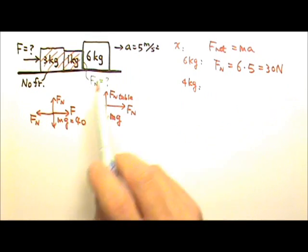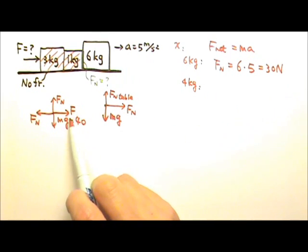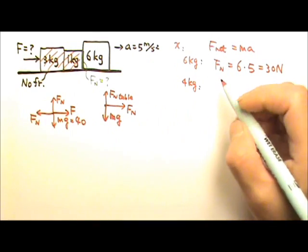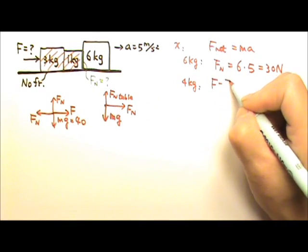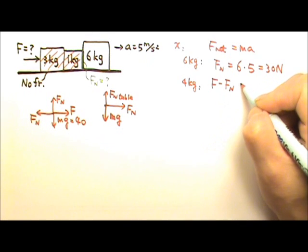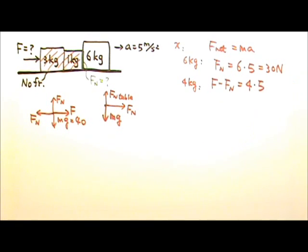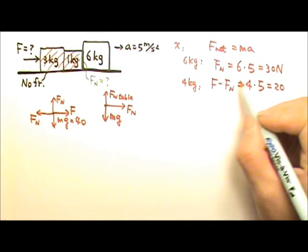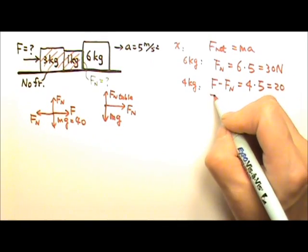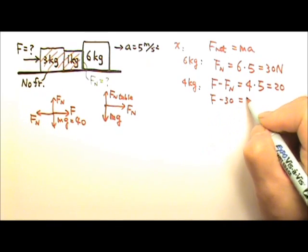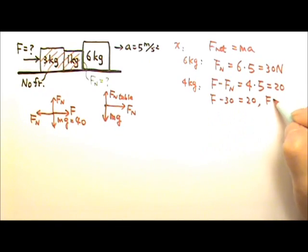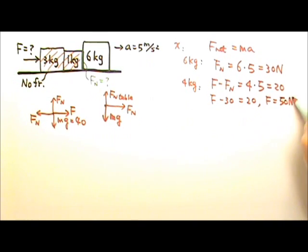For the 4 kilogram block, the acceleration goes to the right, meaning the rightward force must be bigger. So we write F minus the normal force equals M times A: F minus 30 equals 4 times 5, which is 20. Therefore F minus 30 equals 20, and the pushing force must be 50 newtons.